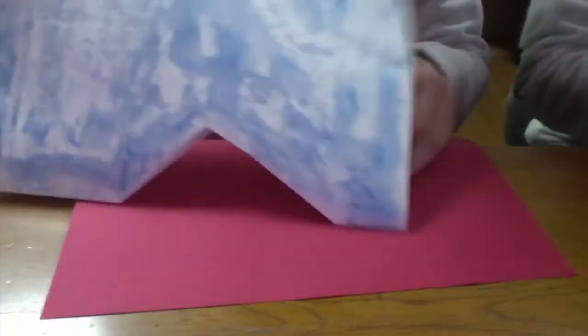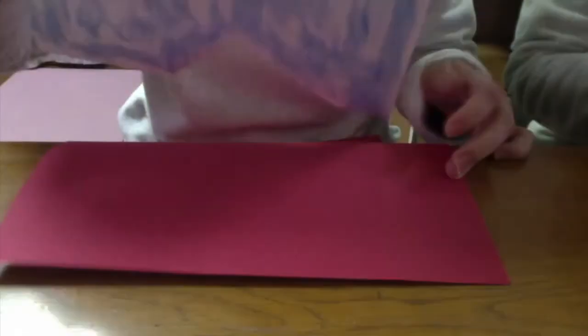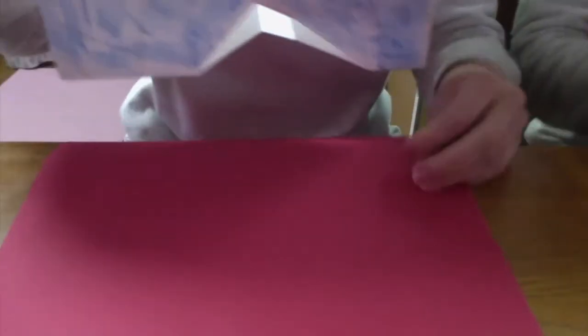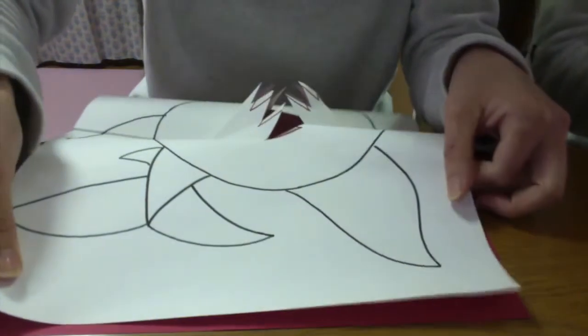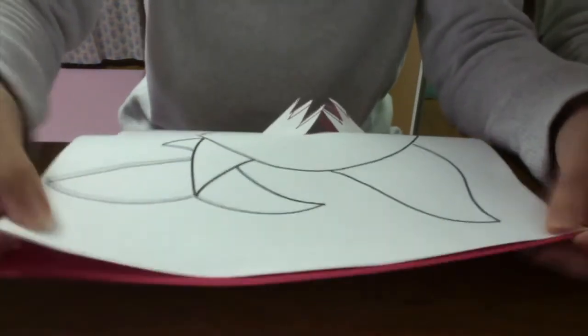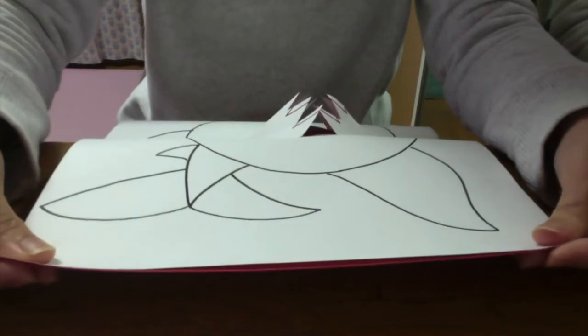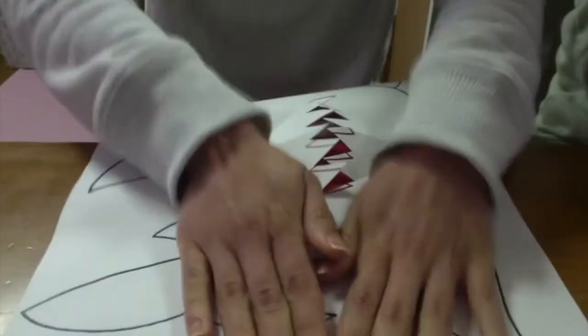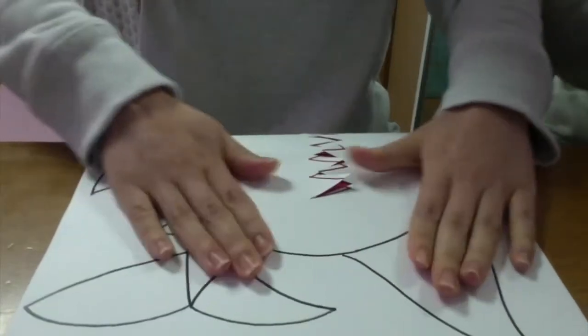With the red paper underneath, take the corners of the white page and align them precisely with the corners of the red page. Once those corners are set, push the page down.